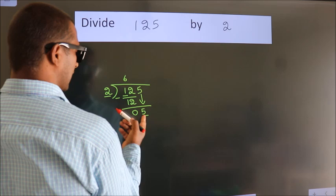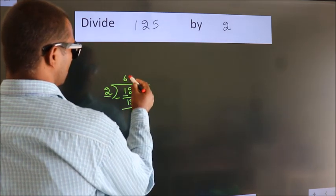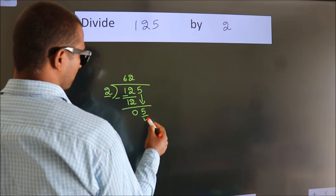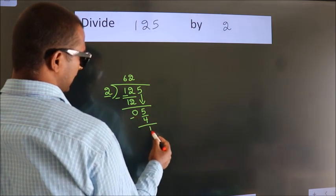So 5. A number close to 5 in the 2 table is 2, 2's, 4. Now we subtract. We get 1.